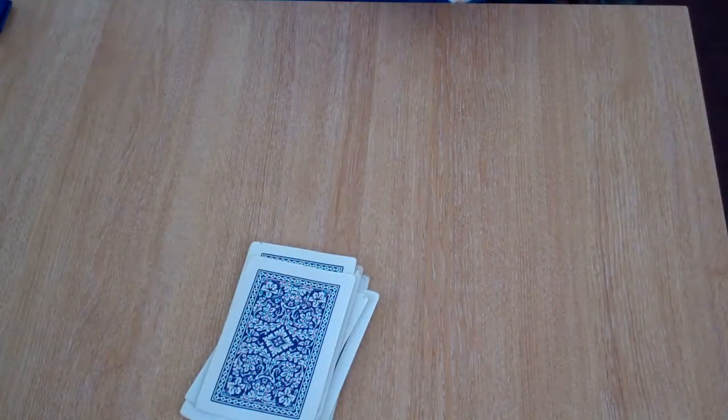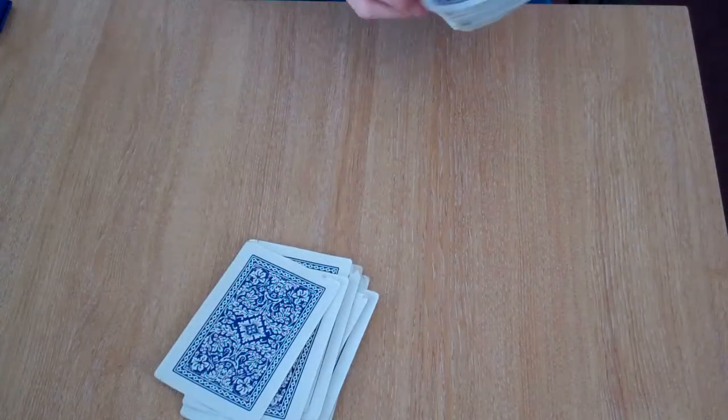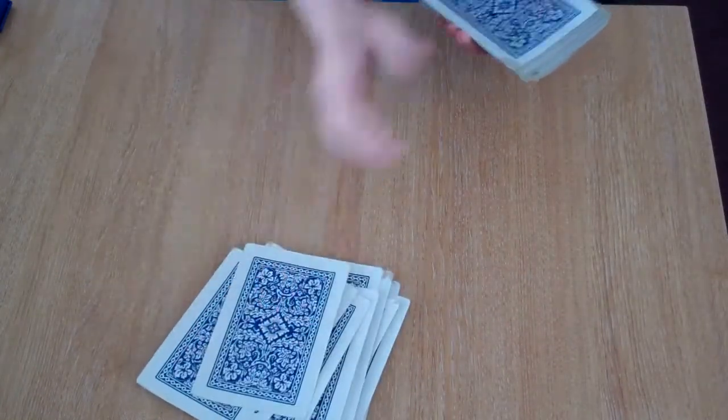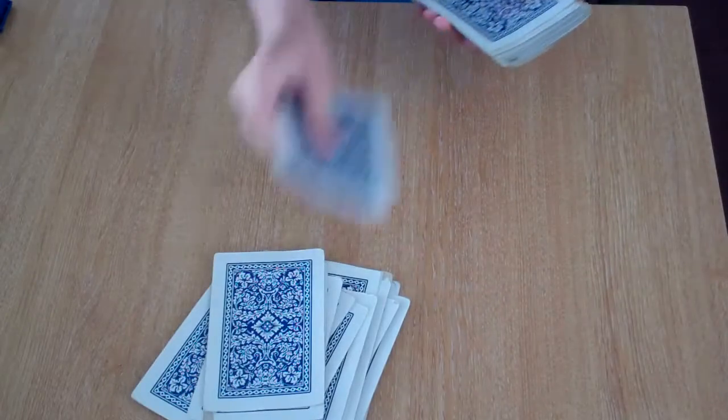Next, you think of 7 blacks. That's going to be a black card. That's 4, 5, 6, 7.